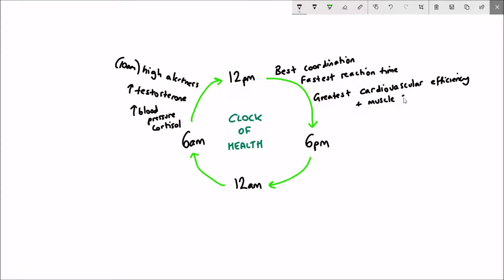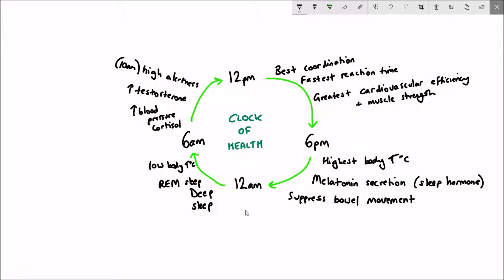Come to the evening and you have the highest blood pressure and body temperature. Melatonin starts to get secreted in the evening, and this is your sleep hormone. Finally, before you eventually go to sleep, you have the suppression of the bowel movements. During sleep itself, initially you start with deep sleep followed by REM sleep. This is where you have a low body temperature before you wake up again in the morning.